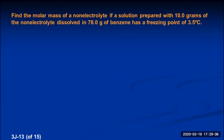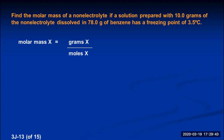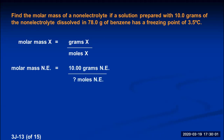We can use freezing point depression to determine the molar mass of a solute — in fact, this is what happens in experiment 14. We're going to find the molar mass of a non-electrolyte if a solution is prepared with 10.0 grams of the non-electrolyte dissolved in 78.0 grams of benzene and has a freezing point of 3.5 degrees Celsius. Molar mass is grams per mole — you need the mass of the substance and the quantity in moles. The mass was measured at 10.0 grams; the colligative property allows you to calculate the moles.